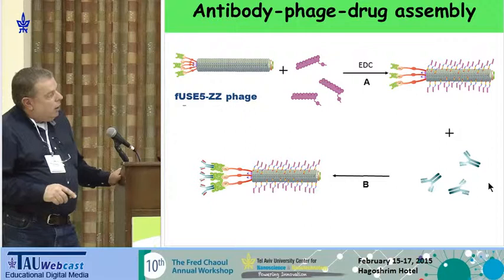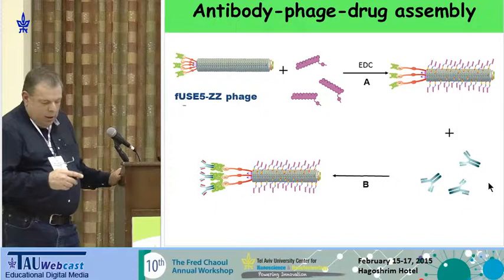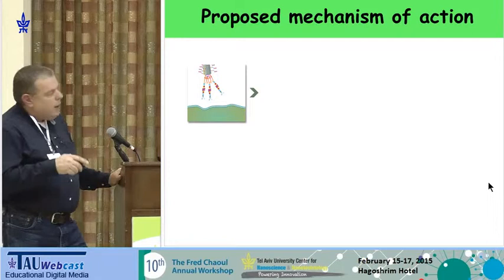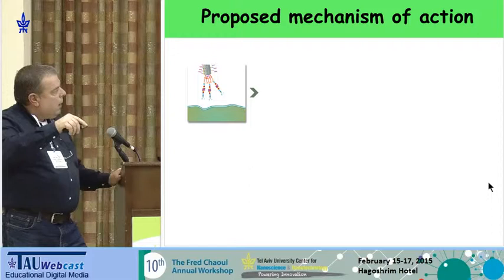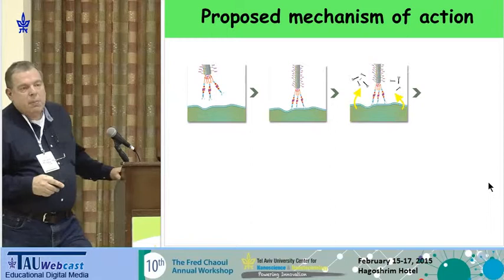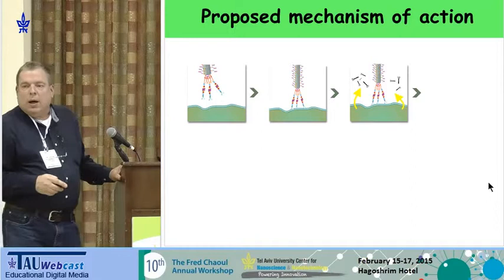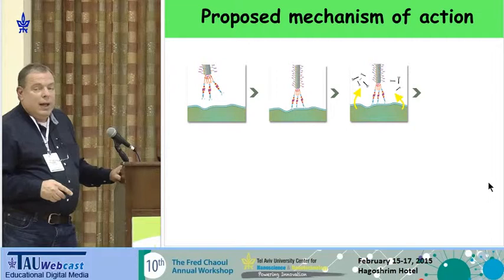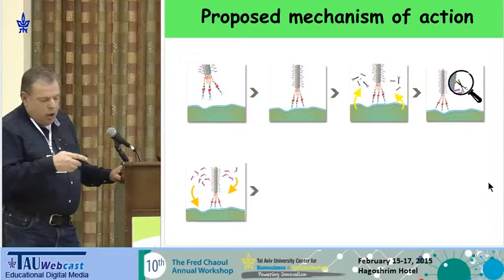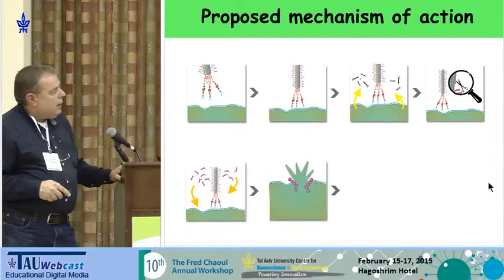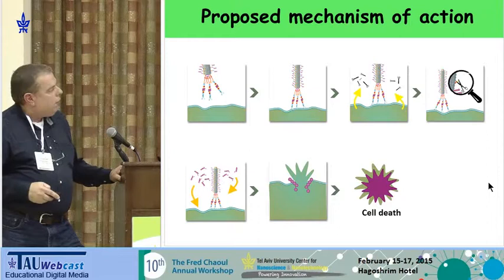How is this drug delivery system assembled? We begin with the bacteriophage. First, we conjugate the modified amphotericin B to the phage to get the drug delivery system. Then we connect it to the antibodies and the whole system is ready to be used. The proposed mechanism of action is that the particle homes to the fungus — at the fungal membrane — and the release mechanism we have genetically engineered causes the drug to be released by the action of proteases, cleaving enzymes released by the fungus itself. So the pathogen triggers drug release upon itself, creating a high local concentration of free drug that accumulates at the membrane, creates pores, and the fungus dies.